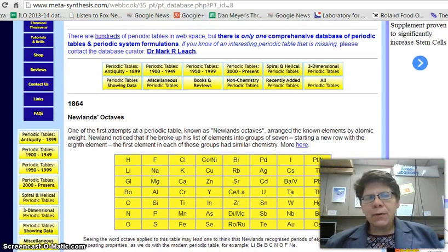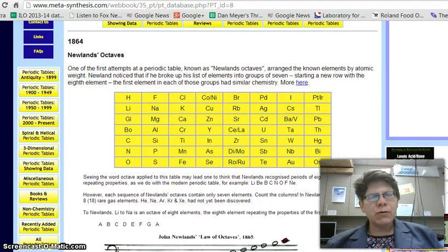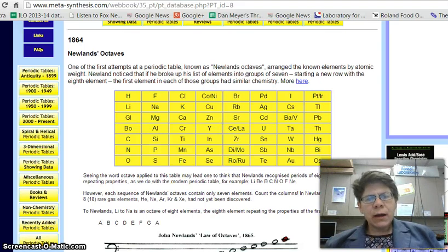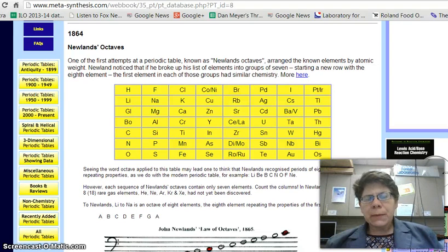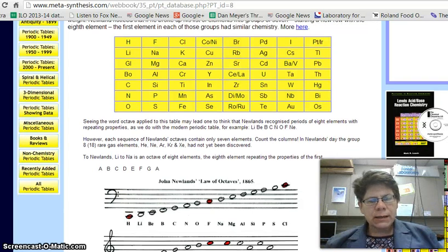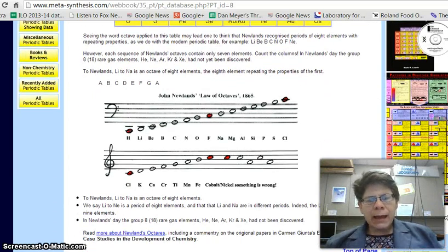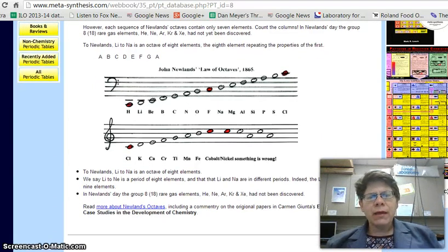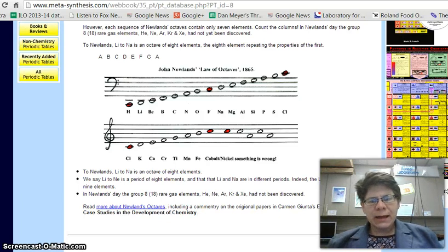And the periodic table readings talk about Newlands Octaves. Newlands noticed that there were patterns among the periodic table. And he came up with this thesis. The eighth element started repeating. And then, gee, we got a problem that arose.